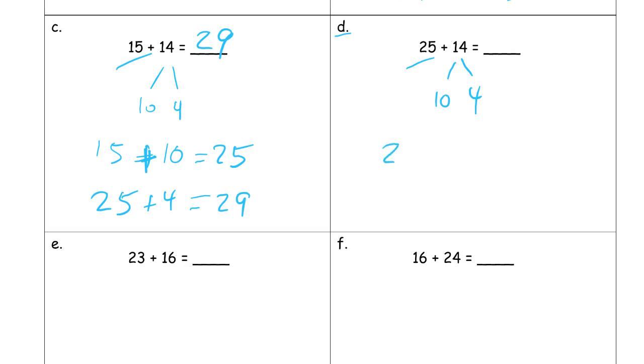So starting with the 25, we're going to add the 10 first. Plus the 10. 35. And then add the 4. 39.